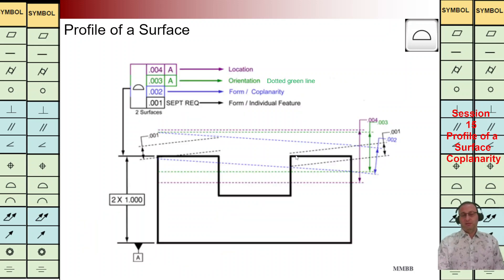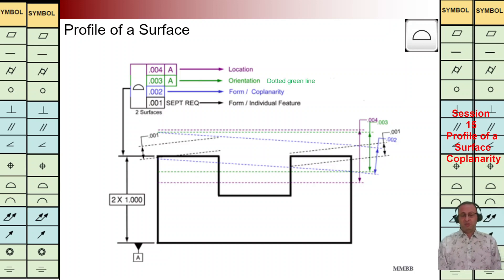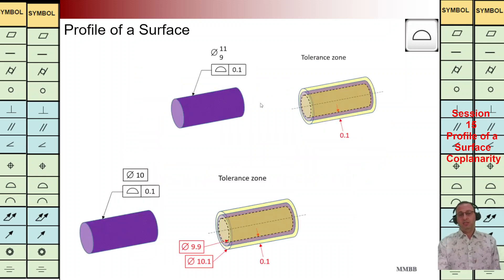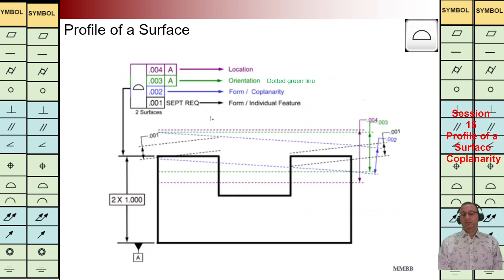For now I would like to close this session regarding co-planarity. In the coming session I'm going to use profile of surface for a cylindrical shape, such as a pin or shaft. Thank you for today — I hope you enjoyed it. See you next time.